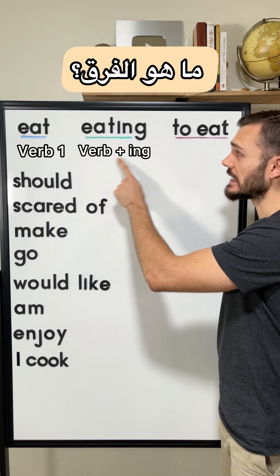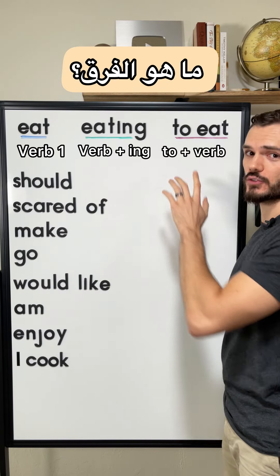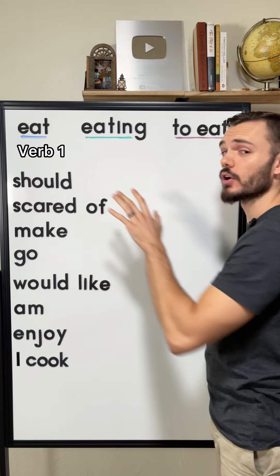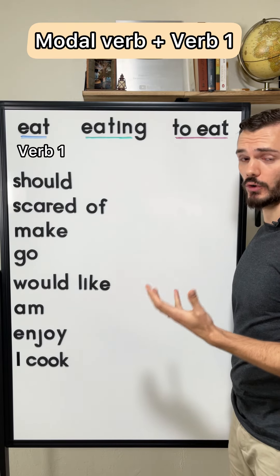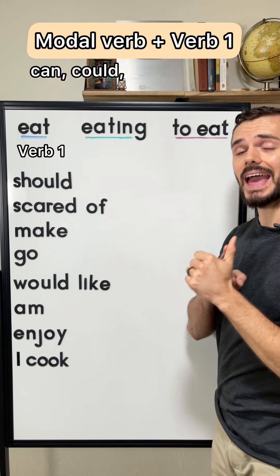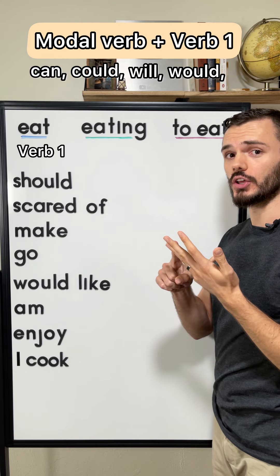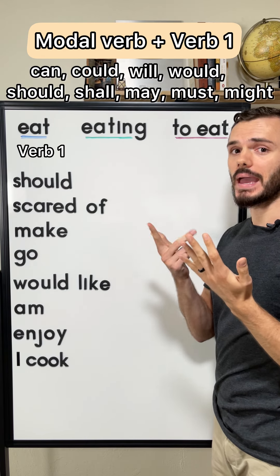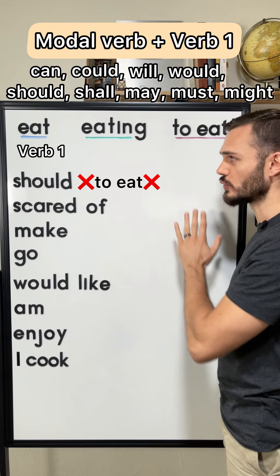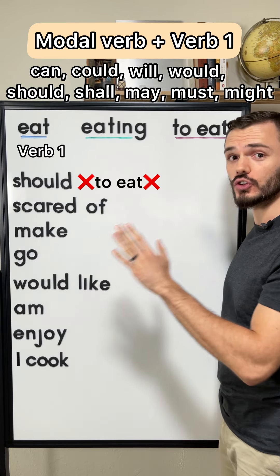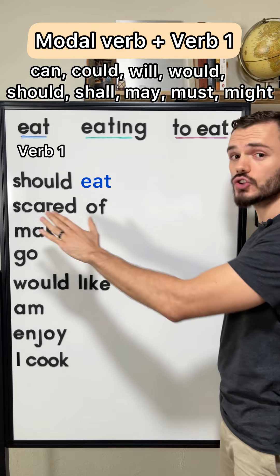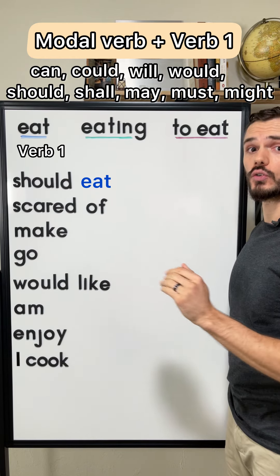There are three forms: the normal verb (verb 1), verb-ing, and to plus the normal verb. We use verb 1 with the nine modal verbs: can, could, will, would, should, shall, may, must, might. After these we never say 'can to eat' or 'should to eat' — it's always 'should eat', 'should go', 'should run'.